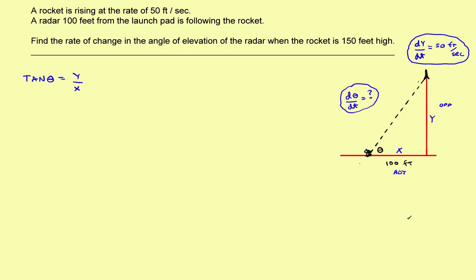In this problem, x is a constant at 100 feet throughout the whole problem. So I can change that to: tan(θ) = y over 100 feet. Just to make finding the derivative a little bit easier, I'm going to rewrite it as: tan(θ) = (1/100) · y. That way, if I left it in fraction form I'd have to use the quotient rule, but with the constant out front it's easier to find the derivative.